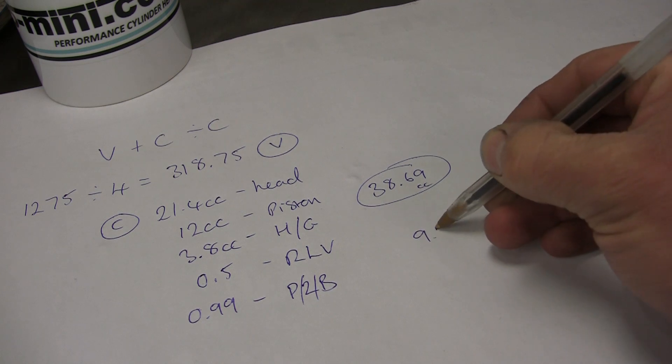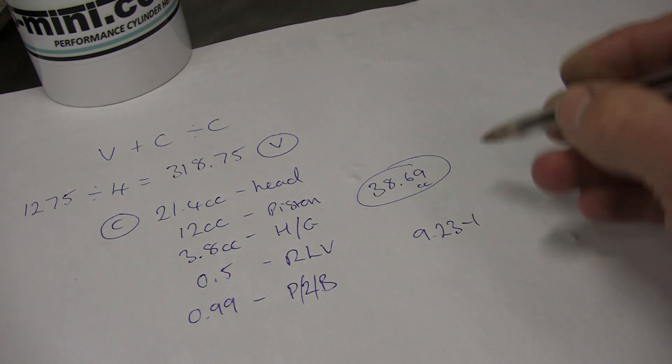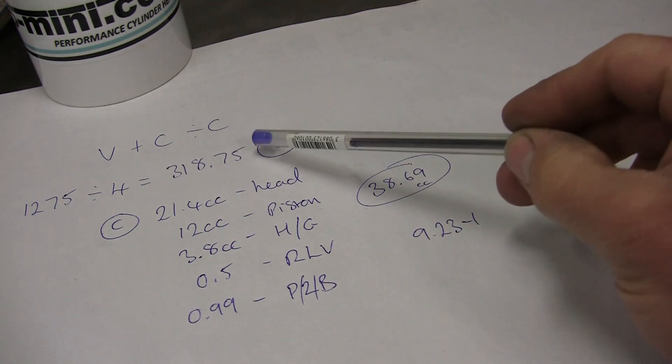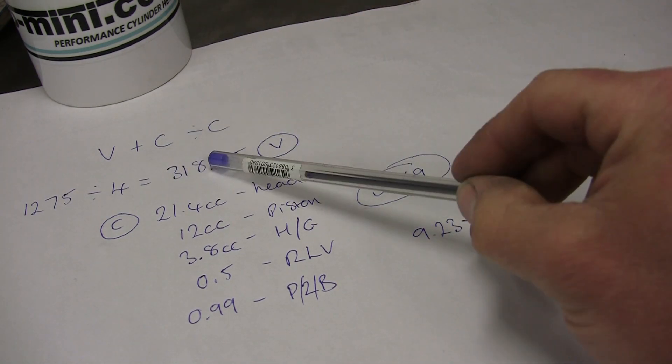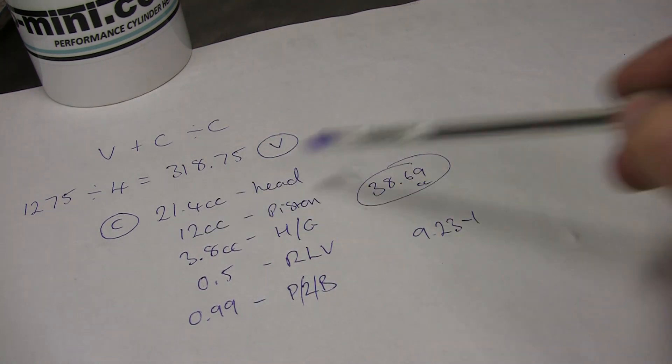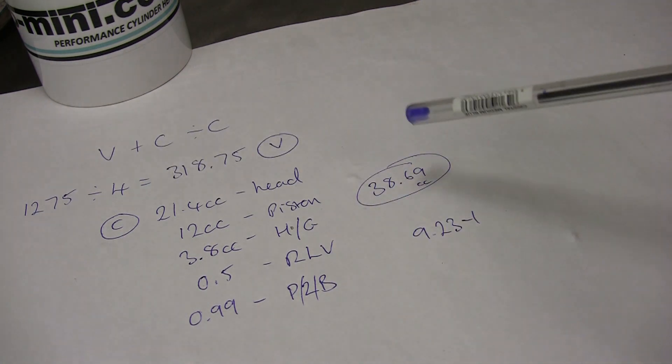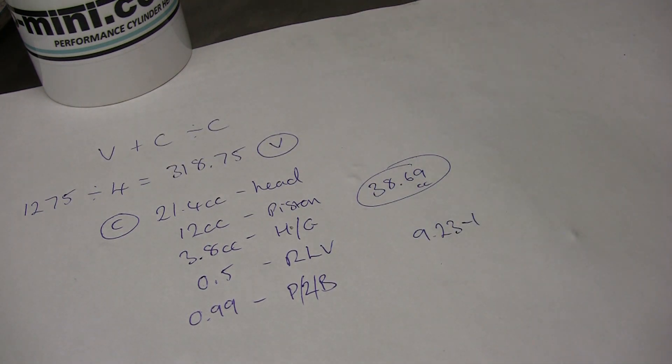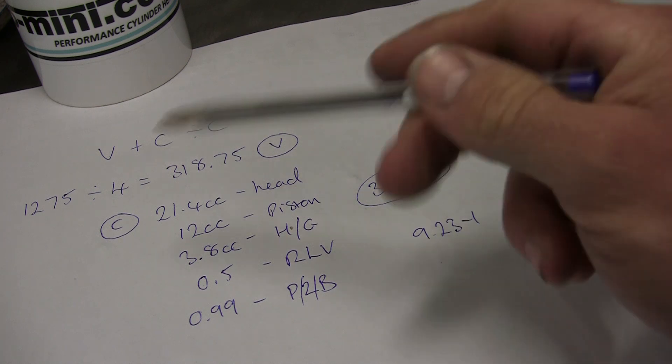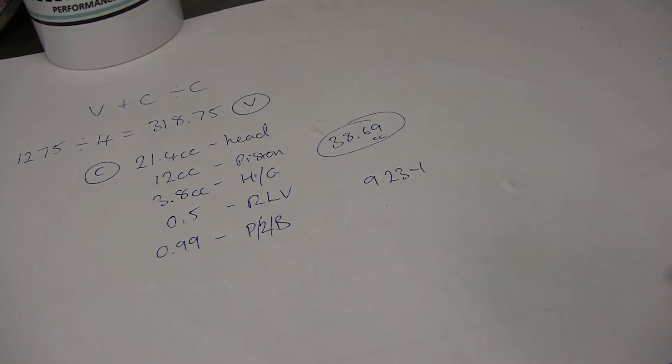With a 1275, the swept volume of one cylinder is V. Add those up—that's C. Do the calculation, and it gives you 9.23 to 1. So that would be your static compression ratio of that particular engine with those figures.